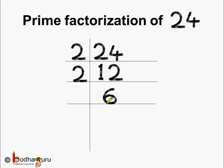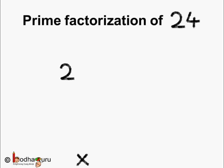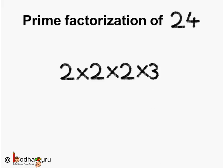We get 6 here. Now 6 is again an even number. So 2 threes are 6. Now we have 3. 3 is an odd number and it is also a prime number. So 3 ones are 3. So our prime factorization of 24 is over and we got all the prime numbers here. So 24 is equal to 2 multiplied by 2 multiplied by 2 multiplied by 3. This is the prime factorization of 24. Understood?